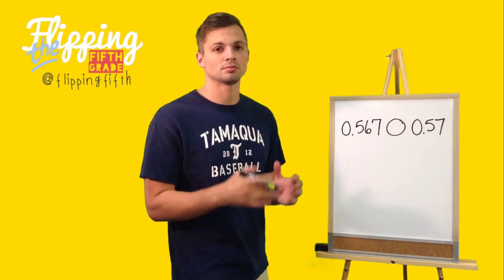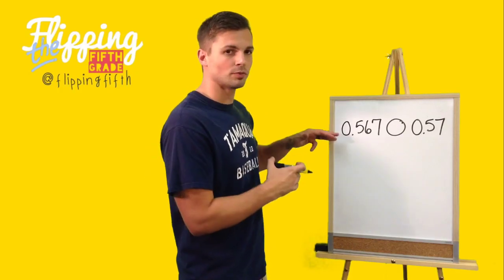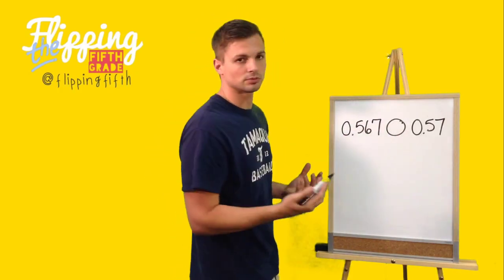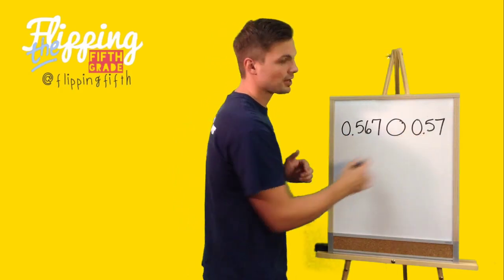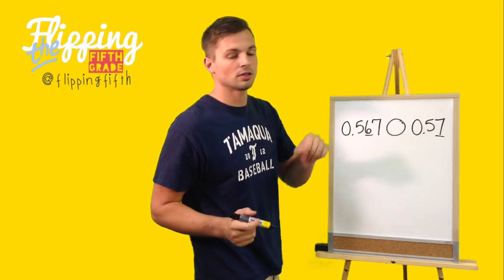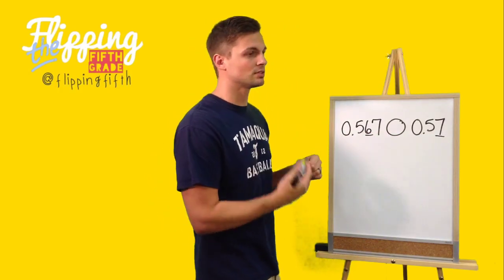So when you're doing this problem, start from the left and work your way to the right. We're going to start with zero and zero - no change. Five and five, still no change. Then we get to six and seven. We can clearly see that that seven is greater than the six.